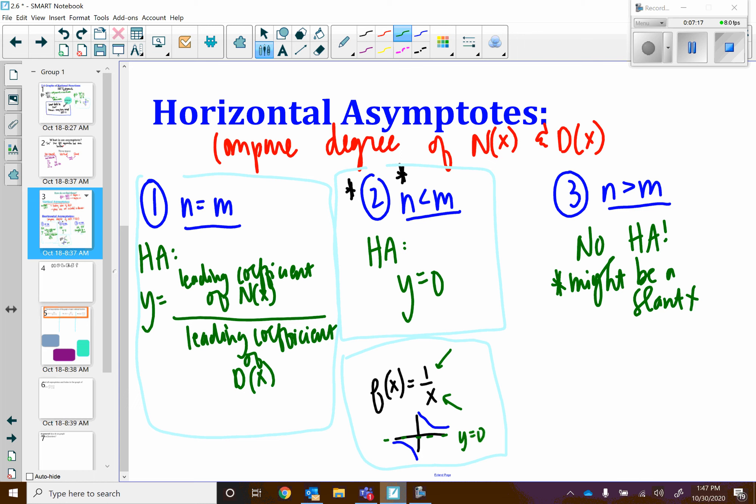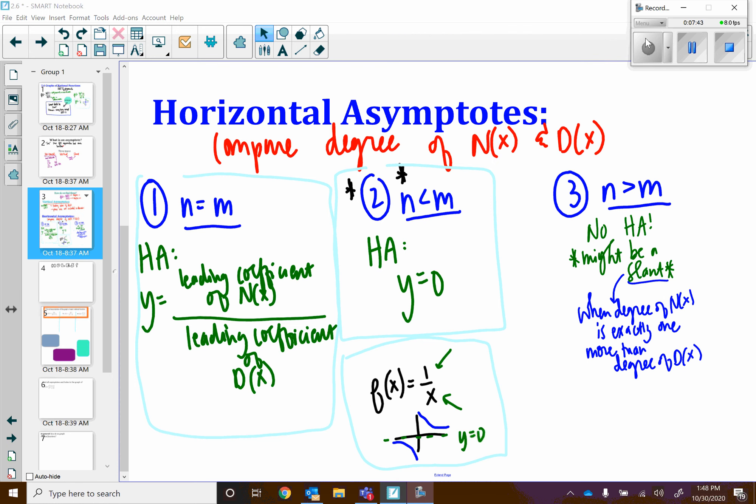How will I know if there is a slant asymptote? This will occur when the degree of our numerator is exactly one more than the degree of our denominator. A slant asymptote, hopefully as it kind of sounds, would be an asymptote that would kind of come on a slant. So it would be like the line y equals mx plus b, whatever the slope and y-intercept are. And you'll calculate some, the slant asymptote by doing the division.